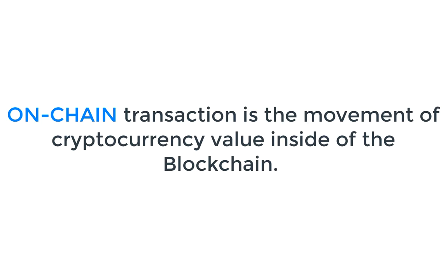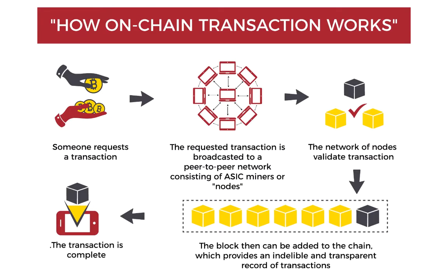Today I want to explain what is the difference between on-chain and off-chain transactions. The transaction is, in its simplest terms, a movement of a particular cryptocurrency value. On-chain transaction is the movement of this value inside of the blockchain. The transfer of cryptocurrency value is broadcast to every node or participant to the network and recorded into the blocks of the blockchain.